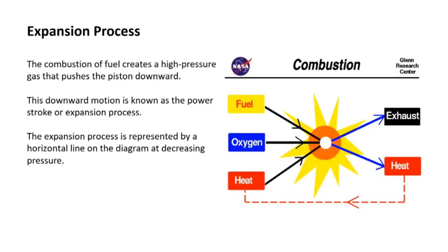The next process is the expansion process. The combustion of fuel creates a high-pressure gas that pushes the piston downward from TDC to BDC. This downward motion is known as the power stroke or expansion process. The expansion process is represented by a horizontal line on the diagram at decreasing pressure.